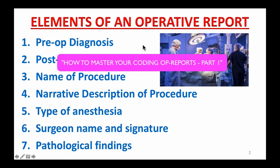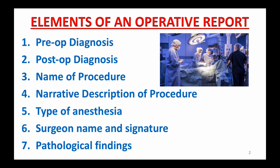Assuming you already watched my last video titled 'How to Master Your Coding Op Report, Part 1,' here is a quick recap on what we have learned. Every op report should include these standard elements: pre-op diagnosis, post-op diagnosis, the name of the procedure, the narrative description of the procedure, time of anesthesia, the surgeon's name and signature, and last but not least, pathological findings.